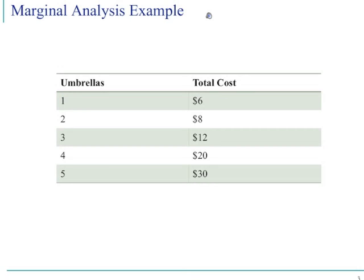The numbers show that the marginal cost of producing an umbrella is going up, while the average cost of producing an umbrella is only $6. For instance, the fifth umbrella costs $10 extra dollars to produce — a $10 increment from the 4th to the 5th umbrella, 10 additional marginal dollars. Even though the second umbrella only costs $2 more — from the first umbrella to the second, you only need two additional dollars to produce.